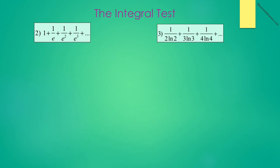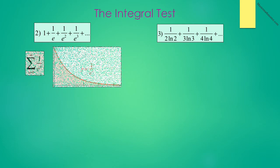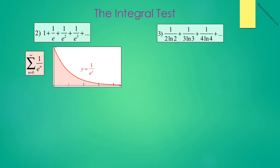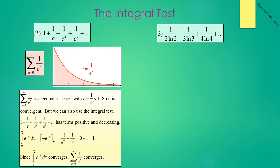In problems 2 through 4, you are given the terms of the series and you will need to write it in series notation format. Problem 2 reads 1 plus 1 over e plus 1 over e squared plus 1 over e cubed plus dot dot dot, which can be written as summation from n equals 0 to infinity of 1 over e to the n. The graph of y equals 1 over e to the x shows it passes the nth term test and could converge. This is a geometric series with r equal to 1 over e, which is less than 1, and therefore it is convergent. However, we could also use the integral test if we wanted to.